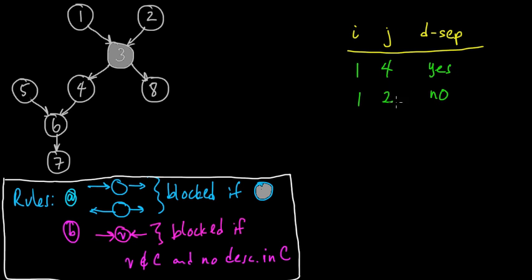So we cannot determine whether 1 and 2 are conditionally independent given 3 — it's undetermined. We cannot say that they're necessarily dependent, nor can we say that they're not. Now let's think about 4 and 5. The path is 4→6←5, a head-to-head relationship. Vertex 6 is not in C and has no descendants in C, so this path is blocked — 4 and 5 are d-separated.